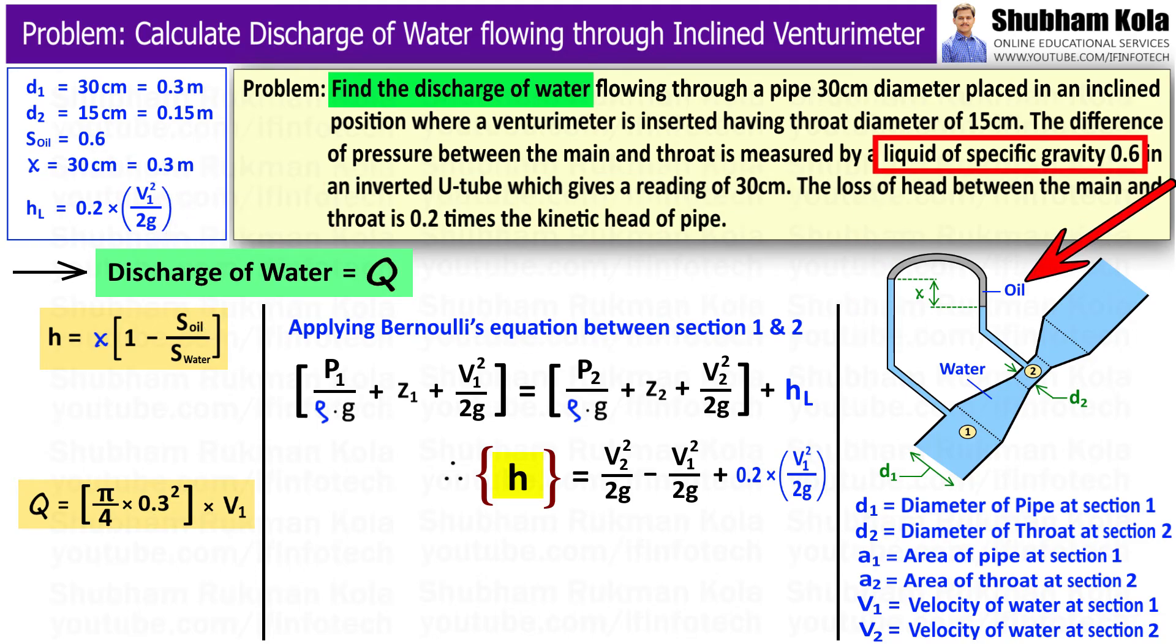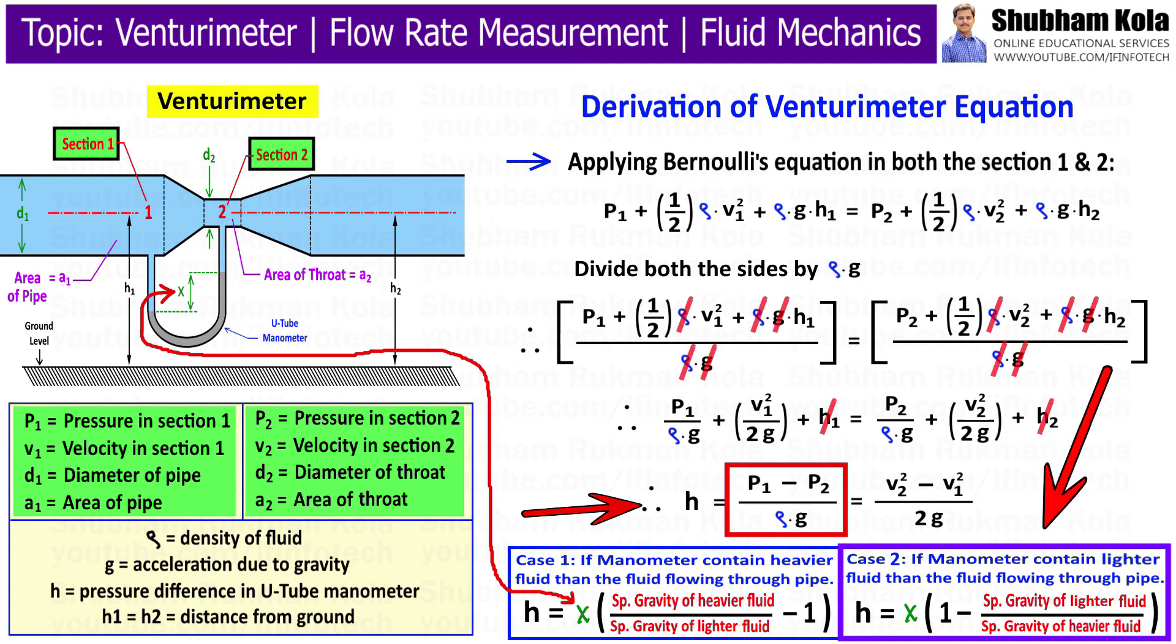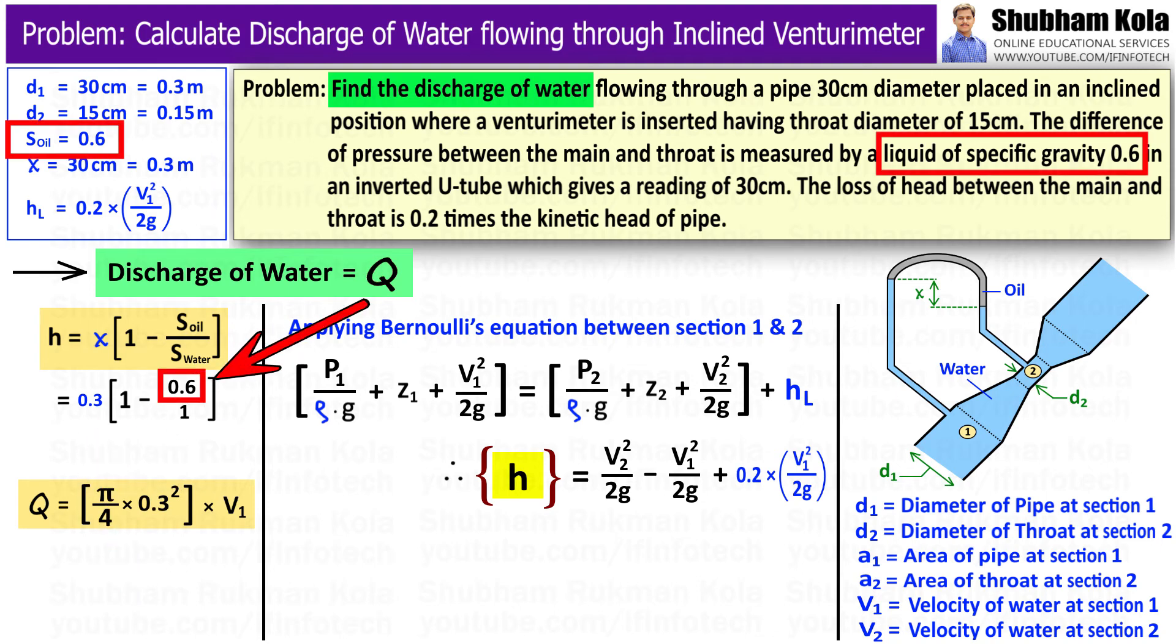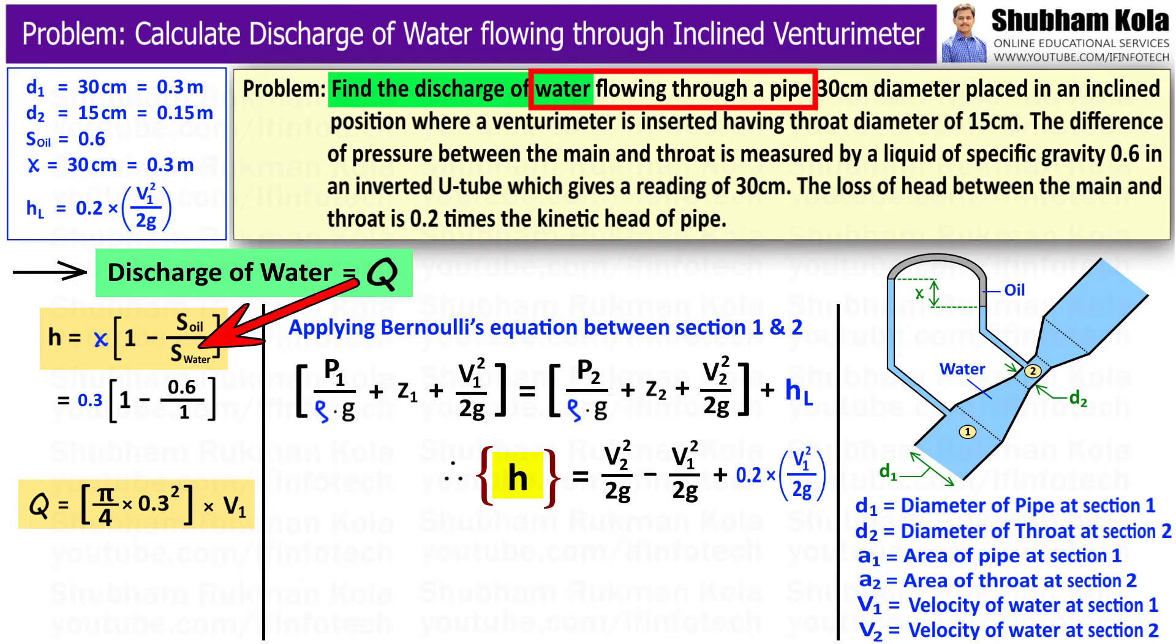In this problem, the manometric liquid is oil, which is lighter than water flowing through the pipe. The formula of small h will be x times 1 minus specific gravity of lighter liquid upon specific gravity of heavier liquid. Here x is 0.3, specific gravity of oil is 0.6, and specific gravity of water is 1. Therefore, h equals 0.12 m of water.